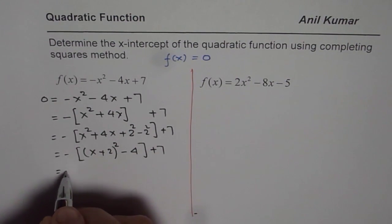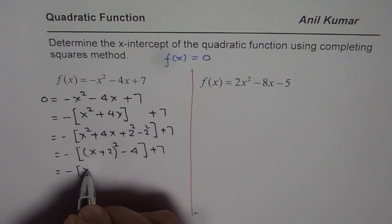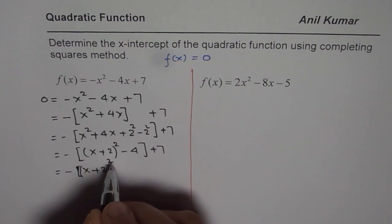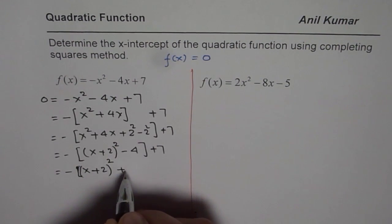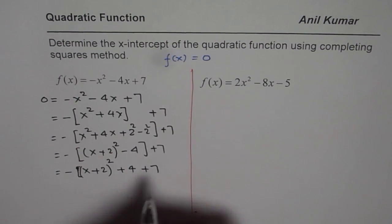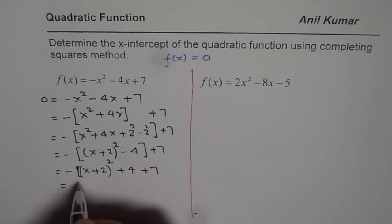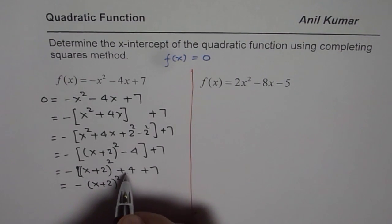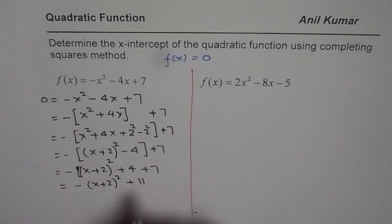Now, we can open the bracket. So, which gives us x + 2 with a negative sign. So, there is no need to write this. We are opening the bracket now. Minus and minus becomes plus 4 and we have plus 7. So, we can write this as -(x + 2)² and 7 + 4 is 11 for us.